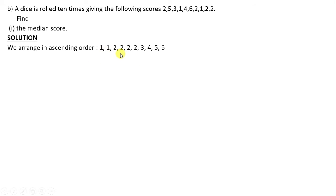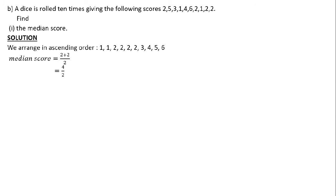If we want to find the median, we are looking for values between position five and six — those two middle values. We cancel out the outer values: one out, one out, two out, two out, then cancel the six, five, four, and three. We remain with a two and a two. Since two appears twice, it's like an average — we add and divide by two. So our median score equals 4 divided by 2, which is 2.